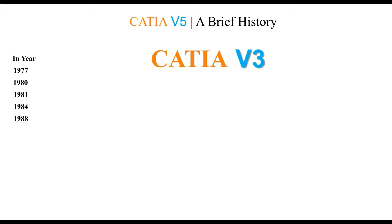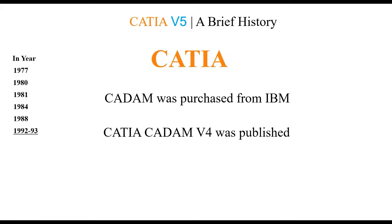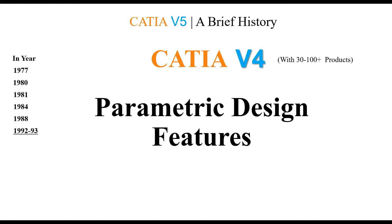Fast forward: in 1988 CATIA V3 was released with 18–25 products, ported to UNIX. Then in 1992–93, CATIA V4 was published, paving the way with 30–100+ products including parametric design features. I will be doing a lot of videos on parametric design features in future upcoming videos, so please subscribe to my channel.